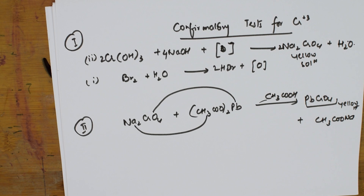These are your Group 3 cation tests and confirmatory reactions. I will meet you again with the next group — Group 4 cations — which includes nickel, cobalt, manganese, and zinc. Thank you for watching, students.